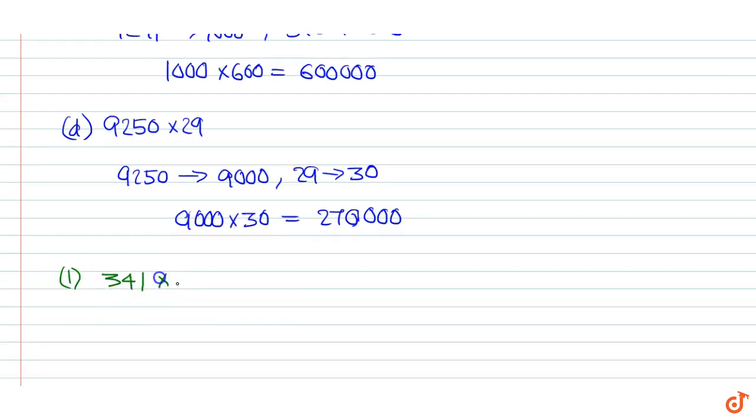341 x 128. 341 can be rounded off to 300. 128 can be rounded off to 100. So the product is 300 x 100 which is equal to 30,000.